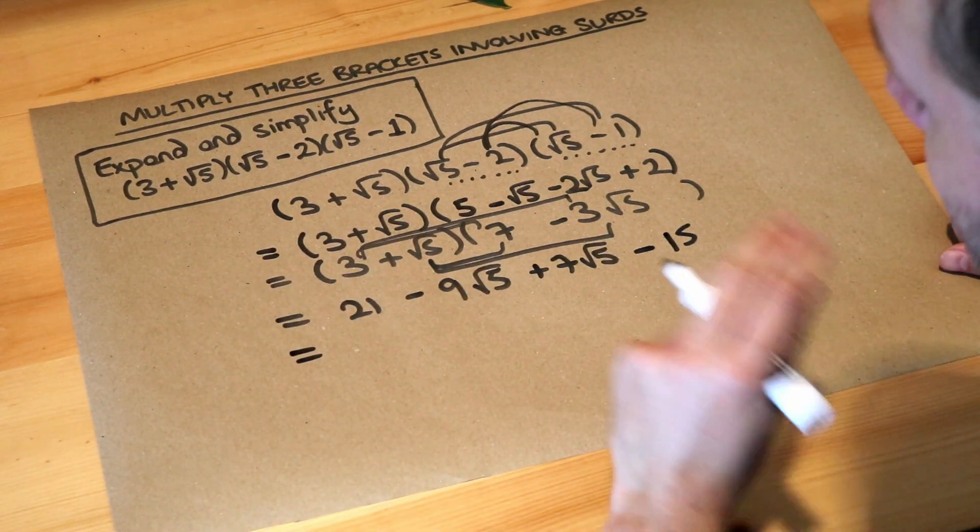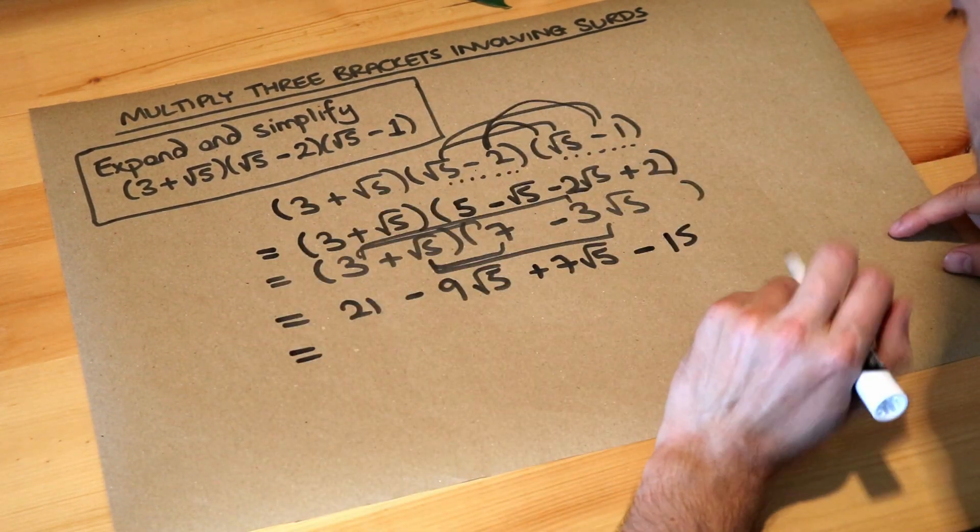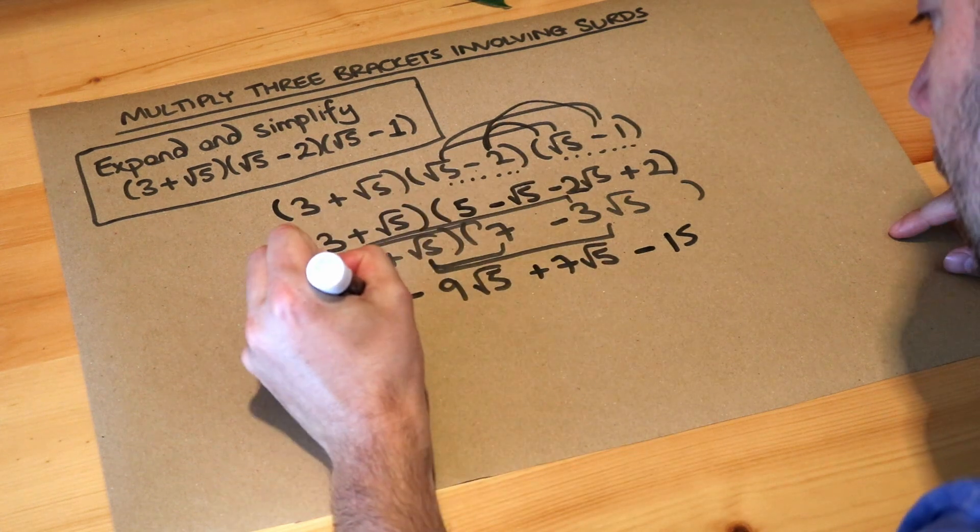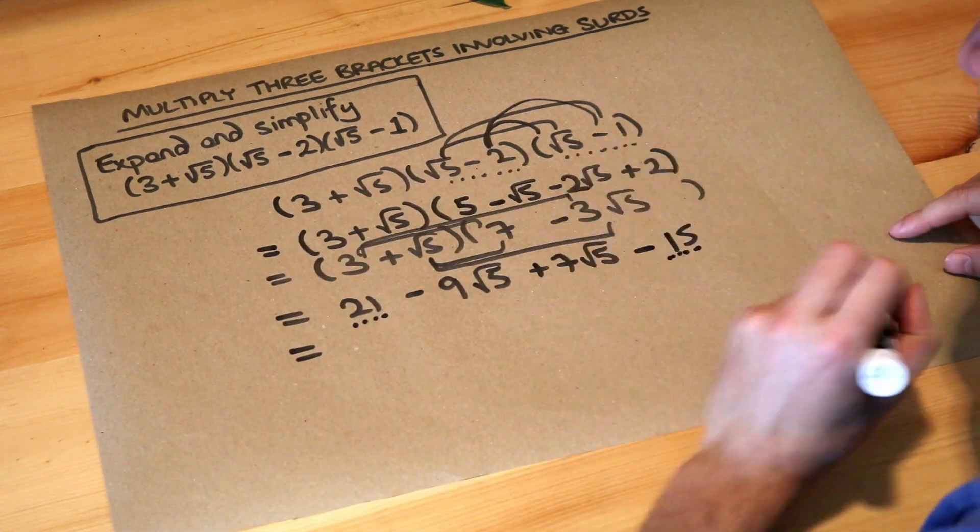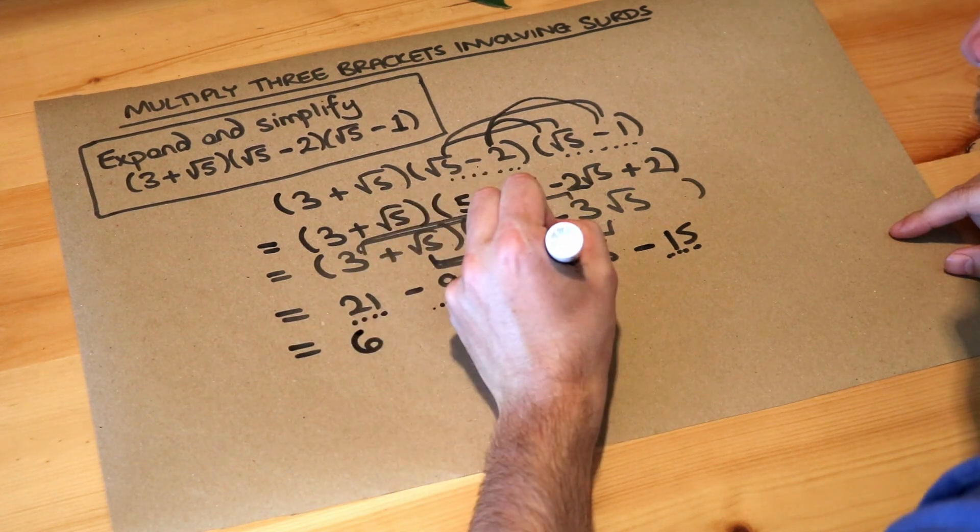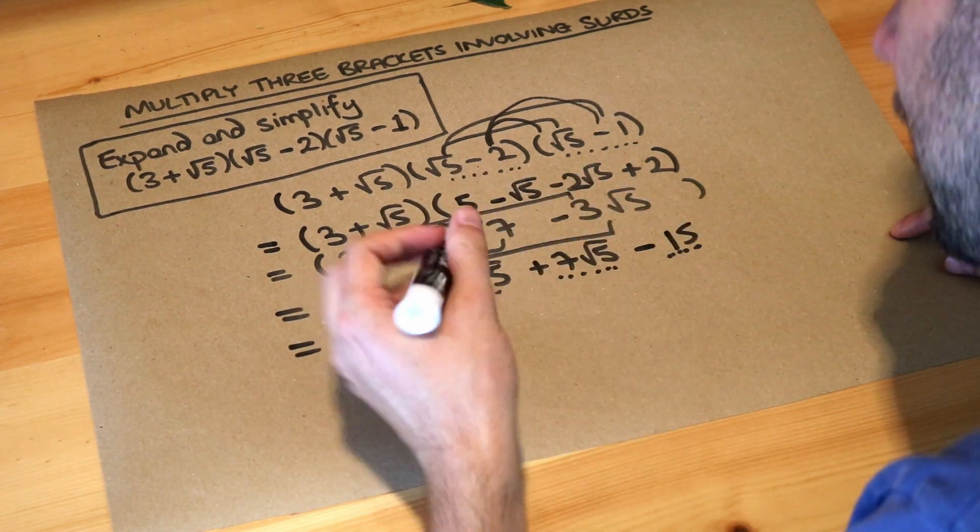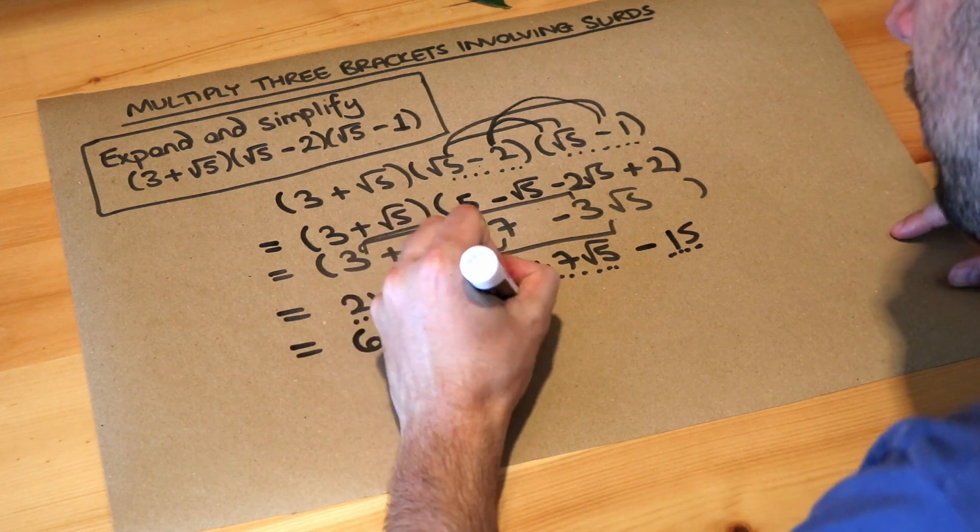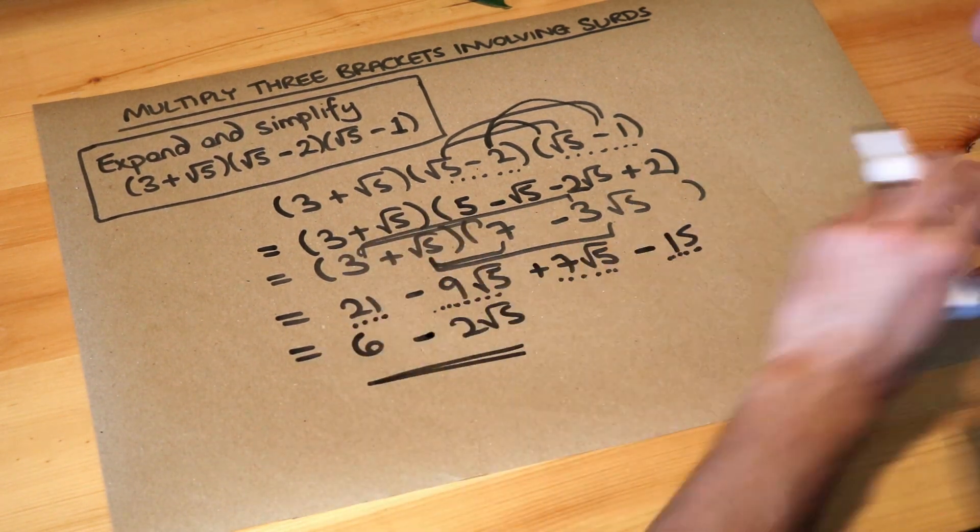Now we collect non-surd terms and surd terms. 21 minus 15 is 6. And -9√5 plus 7√5 is -2√5. So the final answer is 6 - 2√5.